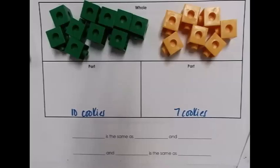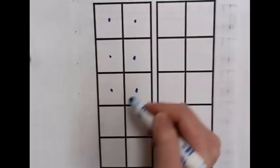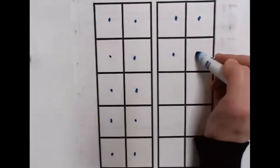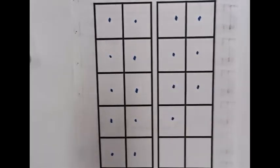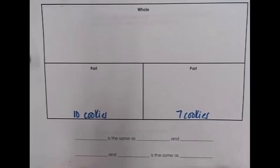Students may also use the part-whole organizer at the representational level. Draw one part — 10 cookies — and another part — 7 cookies. Then combine them into the whole to find the total. Using arrows to show moving parts to the whole prevents confusion from overcounting. Count on from 10: '10, 11, 12, 13, 14, 15, 16, 17.' So 10 cookies and 7 cookies is the same as 17, because 10 ones and 7 more ones equals 17.